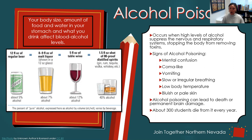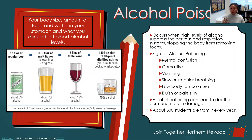Signs of alcohol poisoning include mental confusion, a coma-like state, vomiting, slow or irregular breathing, low body temperature while sweating, and bluish or pale skin. Unfortunately, alcohol poisoning can lead to death or permanent brain damage. Many of those long-term effects are really hard to undo, and alcohol poisoning is that next level where it is no longer reversible — you have permanent brain damage or you are dead. Unfortunately, 300 students die from alcohol poisoning every single year.